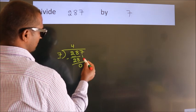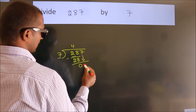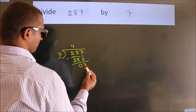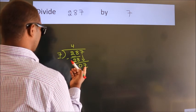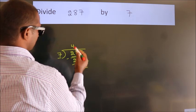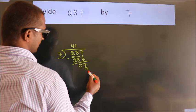After this, bring down the next number. So 7 down. When do we get 7? In the 7 table. 7 once, 7.